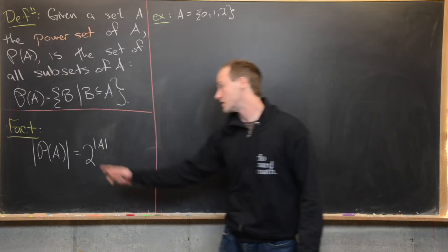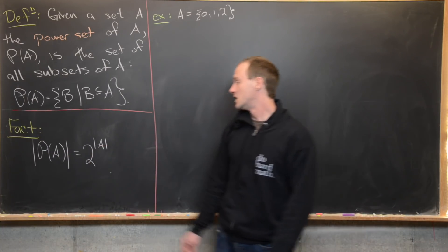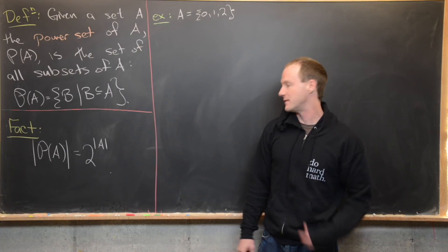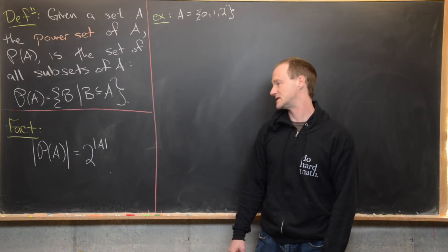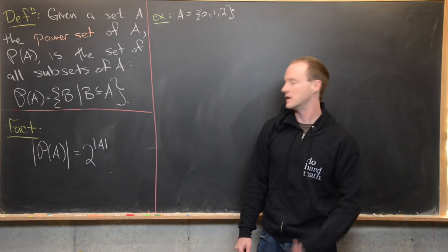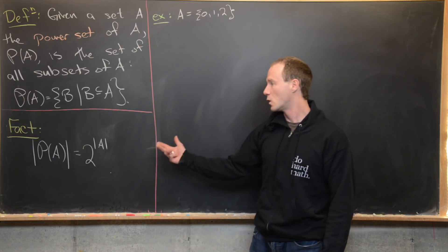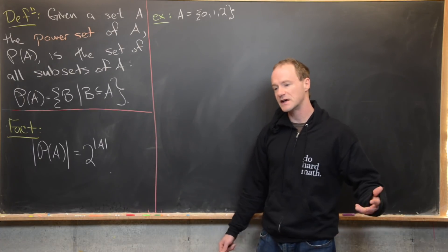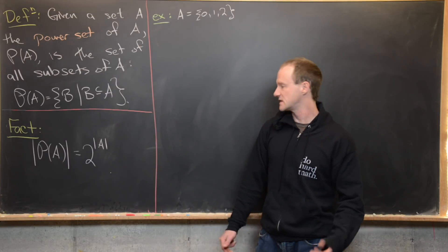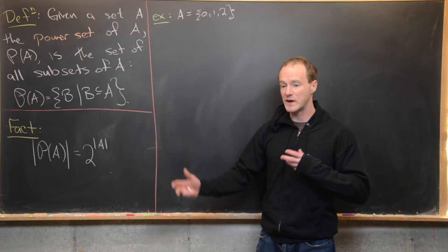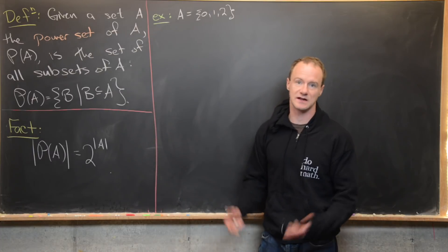Here's a fact: the number of elements in the power set of A is equal to two to the power of the number of elements in A. This fact totally makes sense if A is a finite set, but there's also some meaning to it if A has infinitely many elements. We're not going to prove this fact right now, because this video is part of a series supporting an introductory proof-writing class, and we haven't examined the required proof techniques yet.